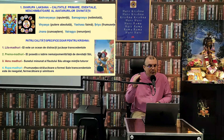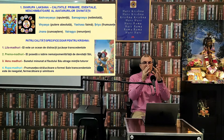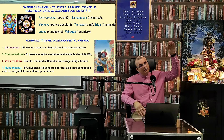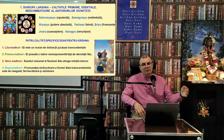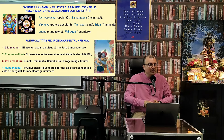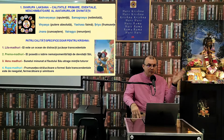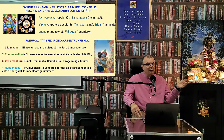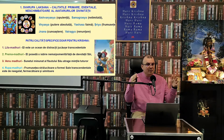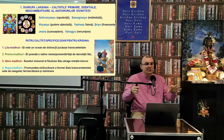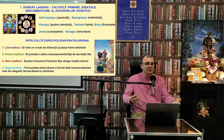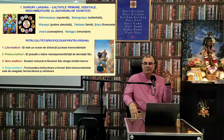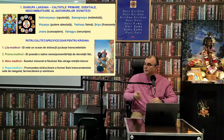Vedele descriu că Persoana Supremă a Divinității se expandează în diferite avataruri. Ava înseamnă cel care descinde din planul transcendental, Tara — în lumea materială. Asta înseamnă Avatar. Vedele descriu: Ramadi murteshu — Persoana Supremă a Divinității posedă atâtea avataruri câte valuri sunt pe suprafața oceanului — nelimitate. Toate avatarurile posedă mai mult sau mai puțin aceste calități: Aishvarya, Samagrasya și așa mai departe.